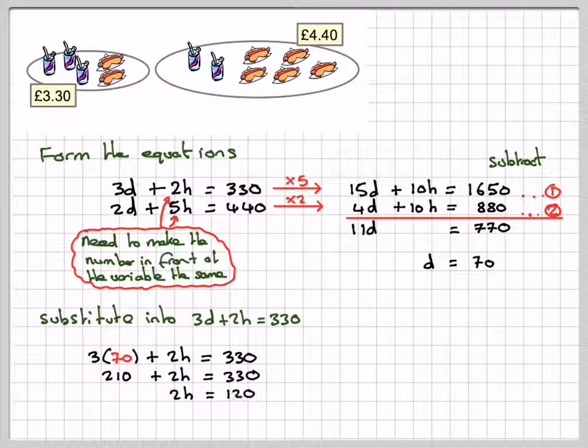Take away 210, we're going to have that 2H is 120. Dividing by 2, we're going to have that H is equal to 60.